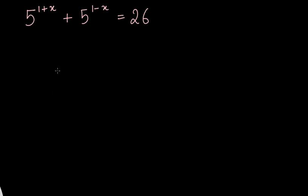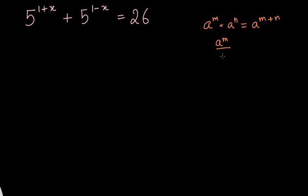Since this is an exponential equation, we need to make use of the laws of exponents. Specifically, we will be using two laws. The first is: a to the power m times a to the power n equals a to the power m plus n. That is, if we have the same base with different powers, when we multiply them we add the powers. When dividing, a to the power m by a to the power n equals a to the power m minus n.